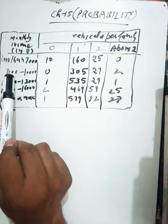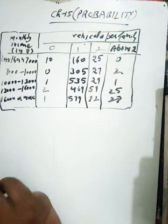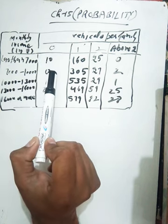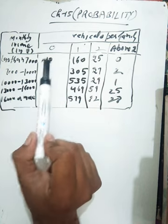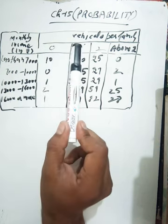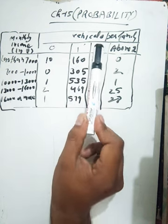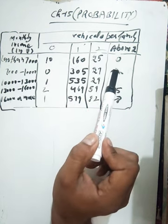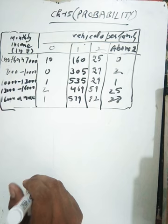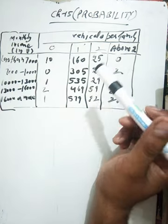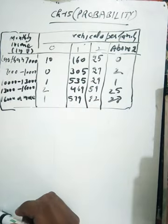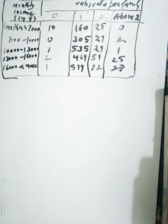For families in different income ranges, we have the vehicle counts. The data includes values like 10, 160, 305, 535, and other numbers across different categories, totaling 2,400 families. Now we'll find the probability.